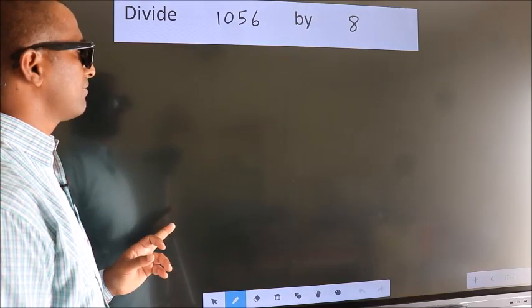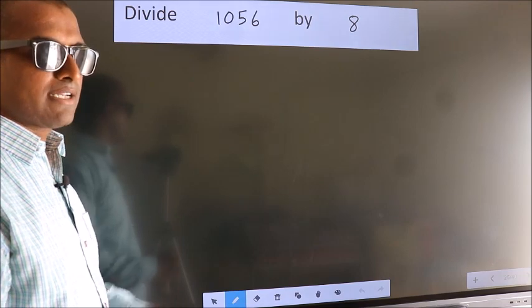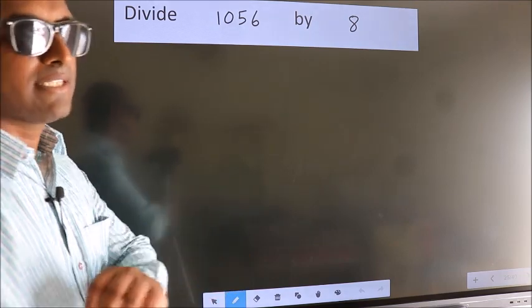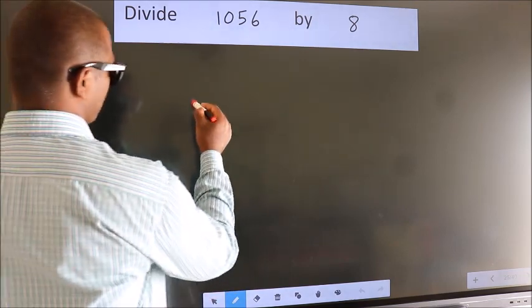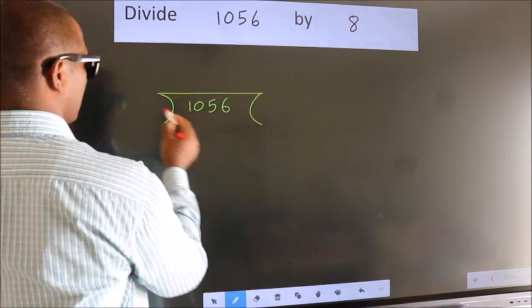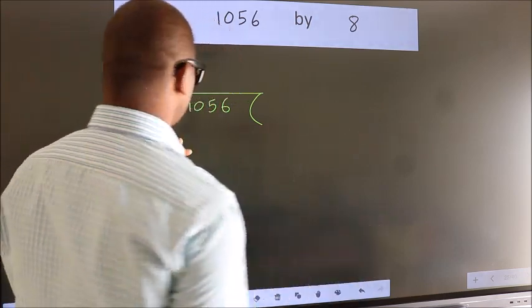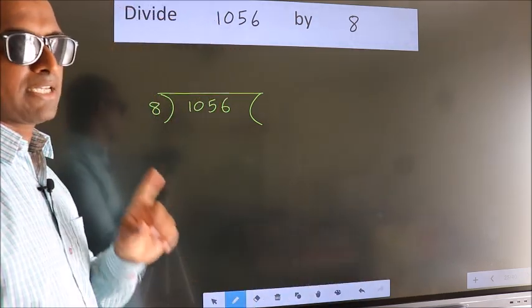Divide 1056 by 8. To do this division, we should frame it in this way: 1056 here, 8 here. This is your step 1.